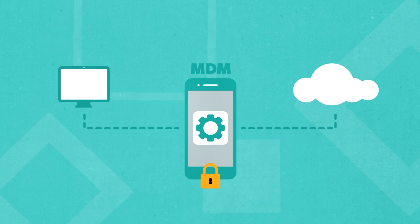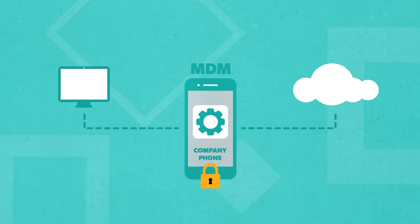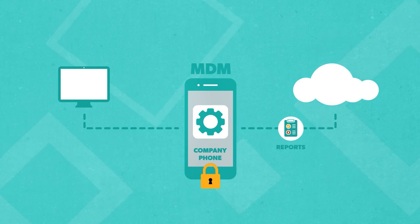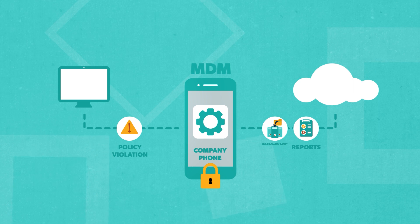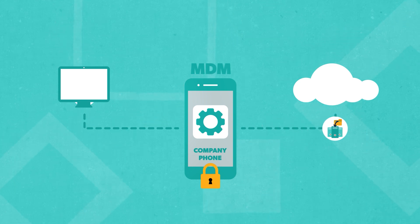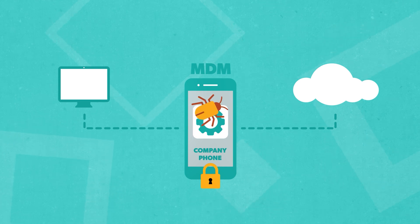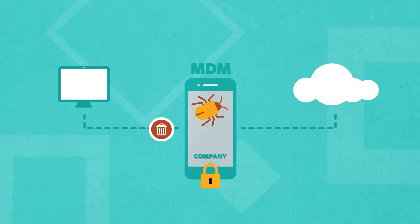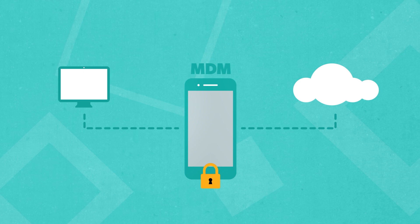MDM is typically used for company-owned devices and is often used in conjunction with a mobile operating system's built-in management features. The best MDM software automatically generates reports, sends policy violation alerts, and backs up files and data, so that IT can immediately react to possible signs of a breach. MDM software can also help you lock, shut down, and wipe devices to prevent unauthorized data access whenever malicious activity is suspected.